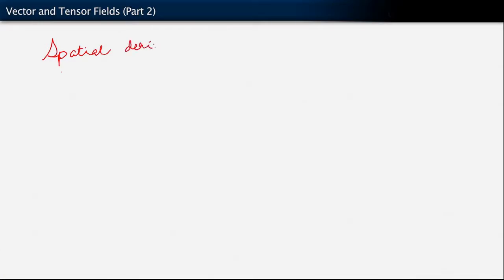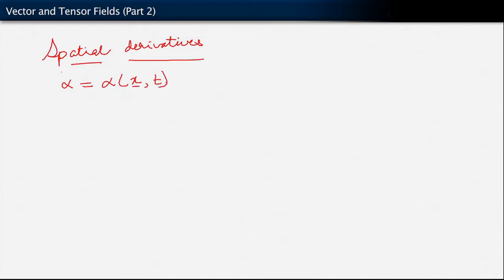Let's now look at spatial derivatives. Let's start, as before, with our scalars. Let's suppose now that we have alpha as before — a function of position and time. Because we've already looked at how to take derivatives with respect to time, I'm not going to worry too much about that, and I'm going to focus only upon the spatial dependence. So let's just suppose that we have the scalar as a function of position, and we know that we are going to work with the basis.